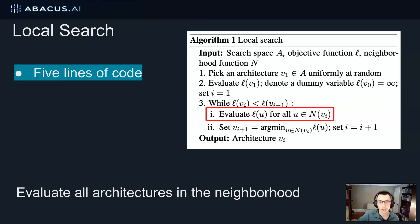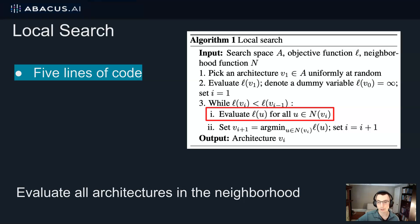I'll start by formally defining local search. In stark contrast to other NAS methods, it's extremely simple — just five lines of code. We start by picking an architecture at random, then we train that architecture. We also train all architectures in its neighborhood, then pick the neighbor with the highest accuracy and start the next iteration. By neighborhood I mean all architectures which differ by at most one operation or edge. We also study one variant where, instead of evaluating all architectures in the neighborhood, we start the next iteration the first time we find a neighbor with a higher accuracy than the original architecture.